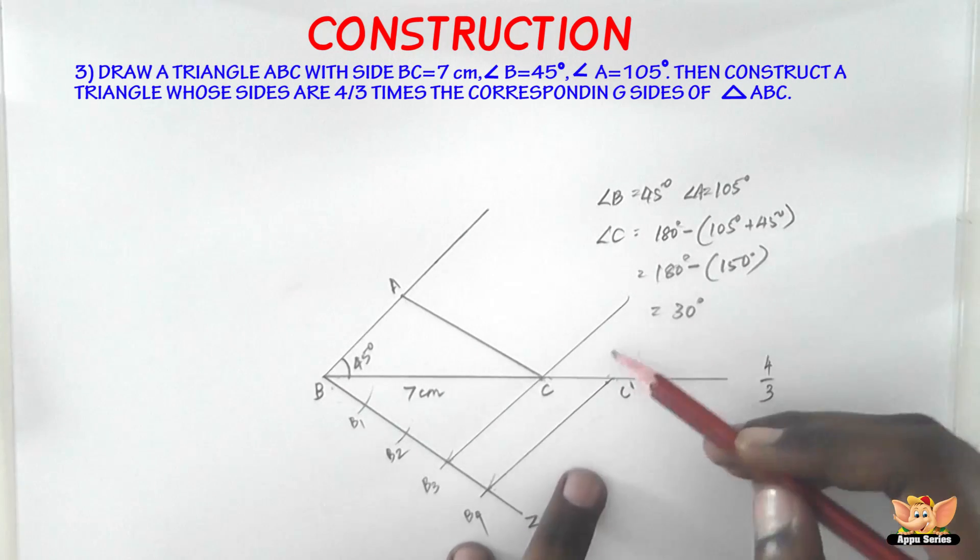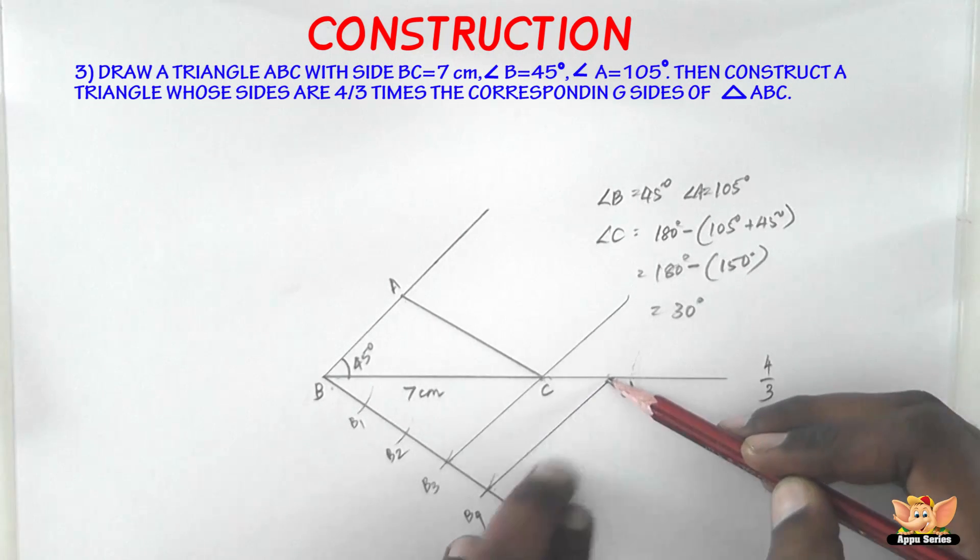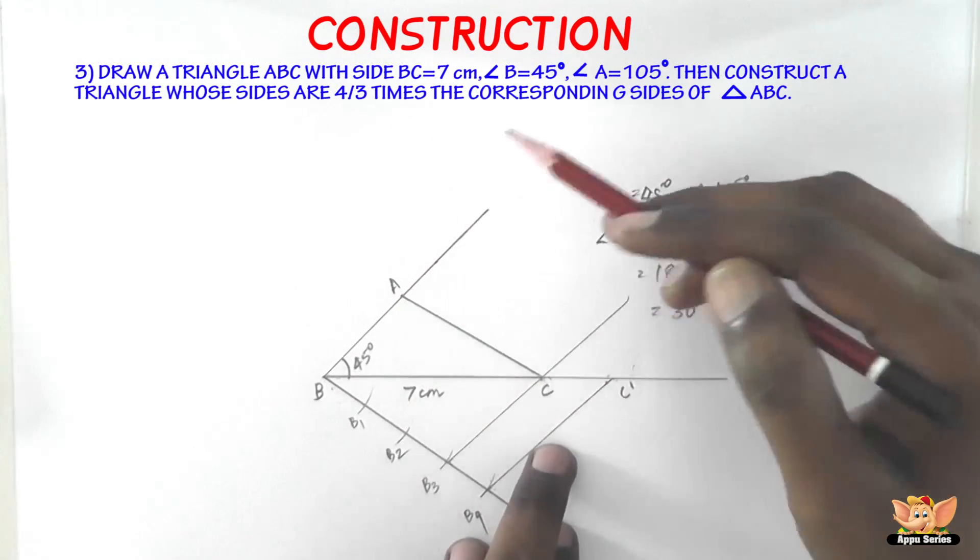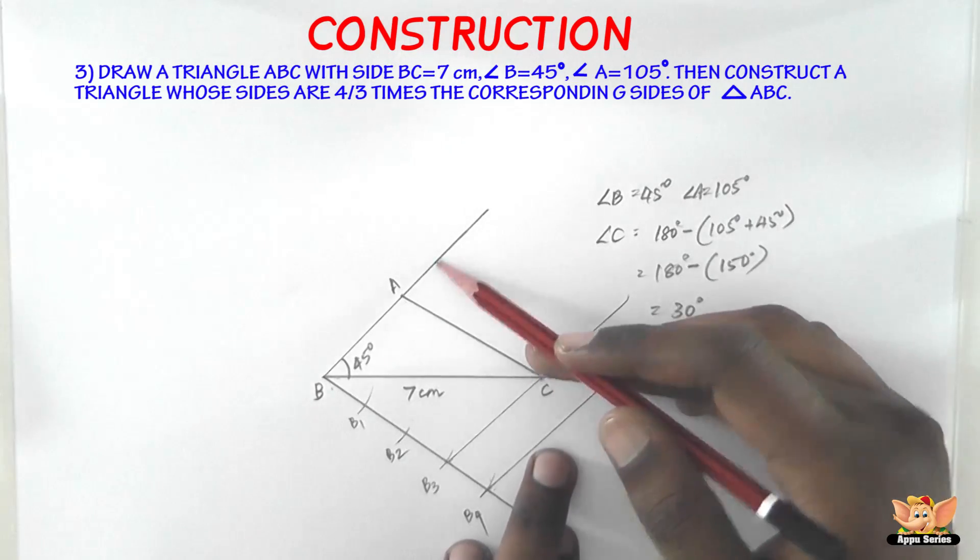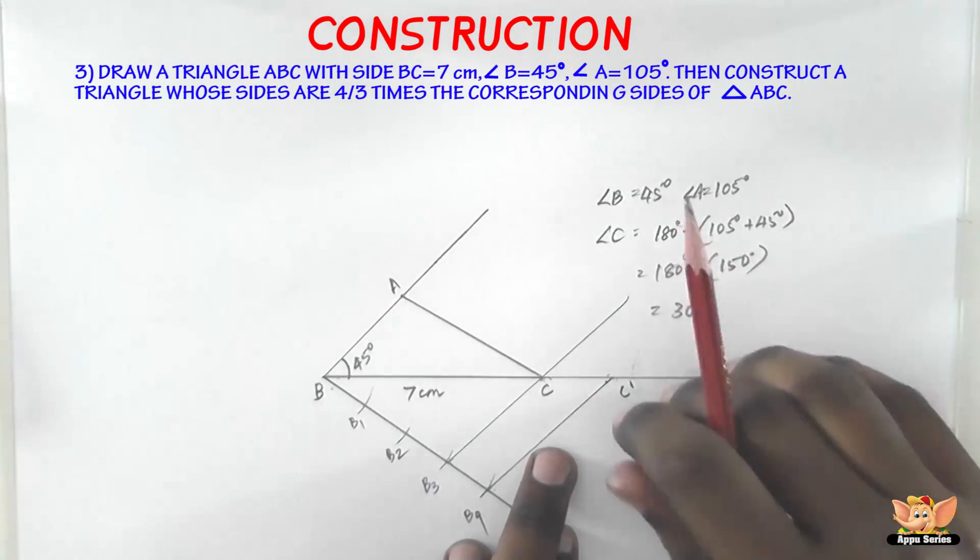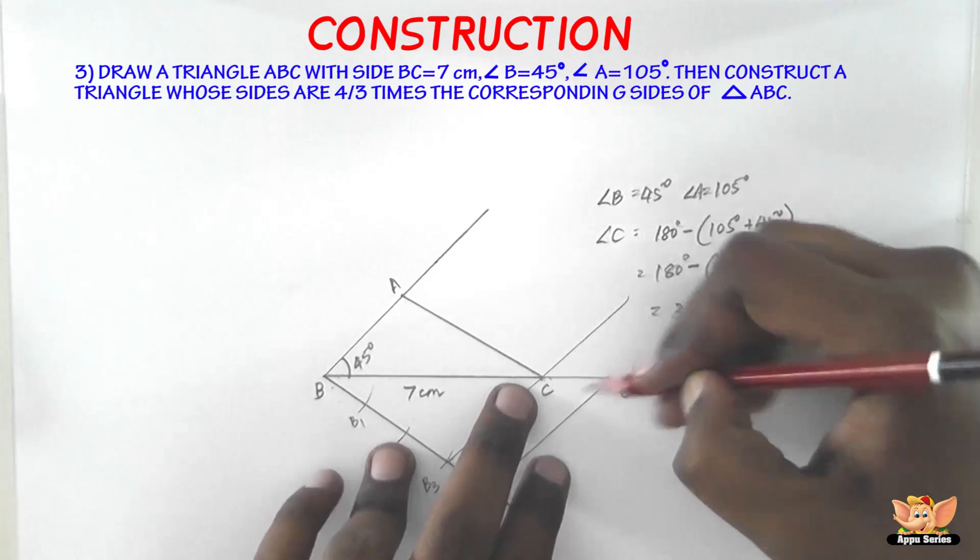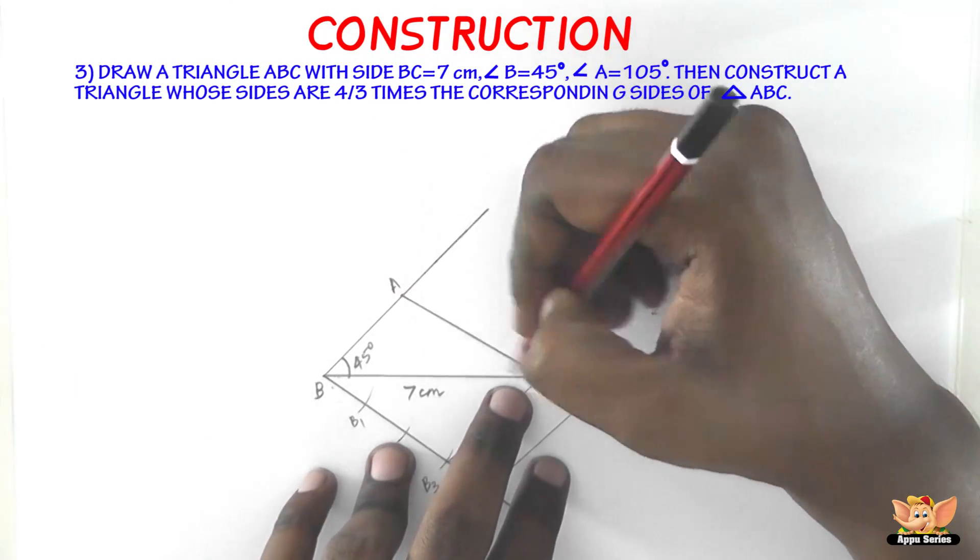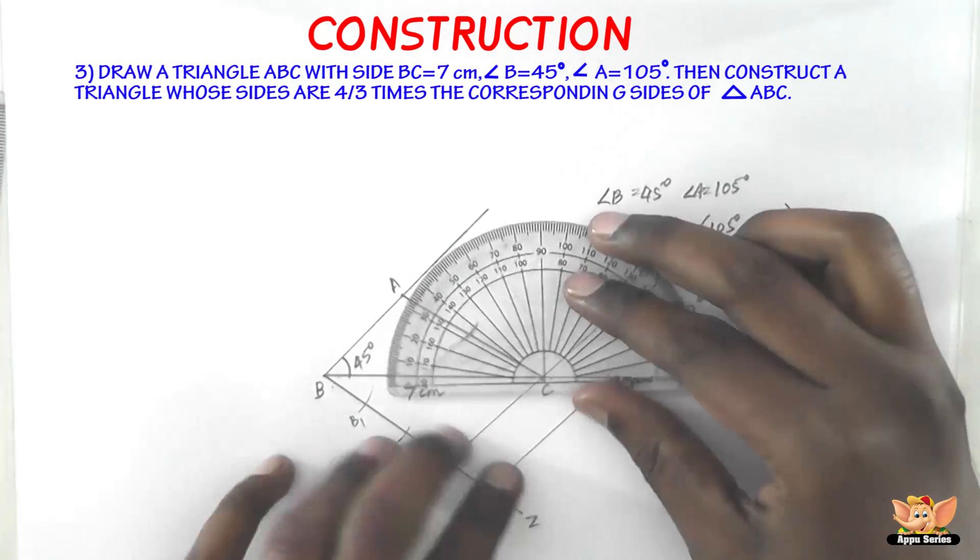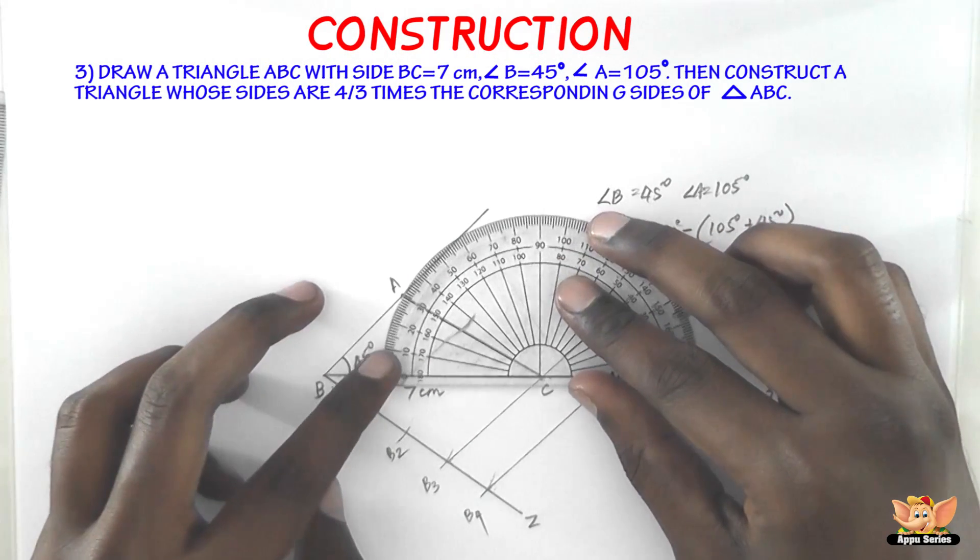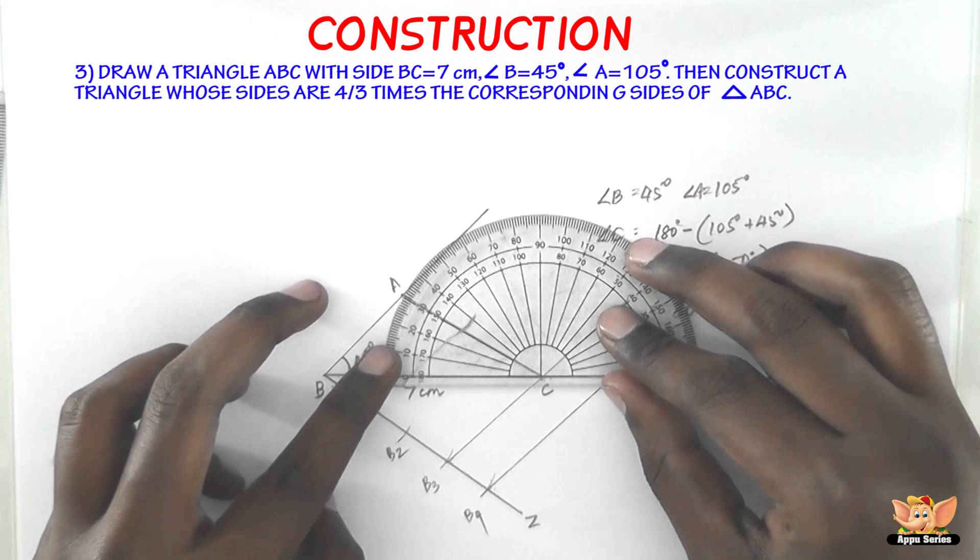Now the next step is draw a line through C dash parallel to CA, intersecting the extended line segment AB at, say A dash. Name it A dash. So now, since we need C dash, A dash parallel to CA, we again have to measure this angle. That the AC makes with BC. So keep it at C.